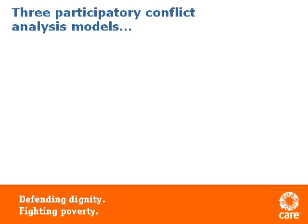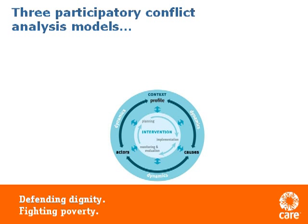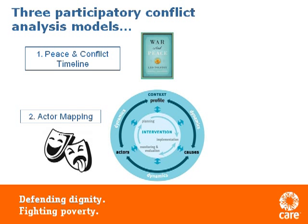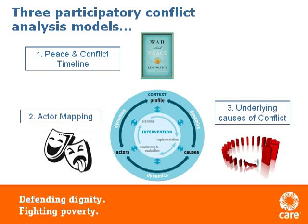So today we're going to think about three frequently used models of participatory conflict analysis and how they might be useful to your work. As you'll see, the outer layer of this blue circle represents the overall context of a particular country or region. We can break this down by thinking about the overall history or profile through a peace and conflict timeline, the stakeholders in the context through actor mapping, and the underlying drivers of conflict relating to the causes that drive a particular context. Now we've had a look through these three different types of participatory analysis, let's think through each of these exercises in turn.